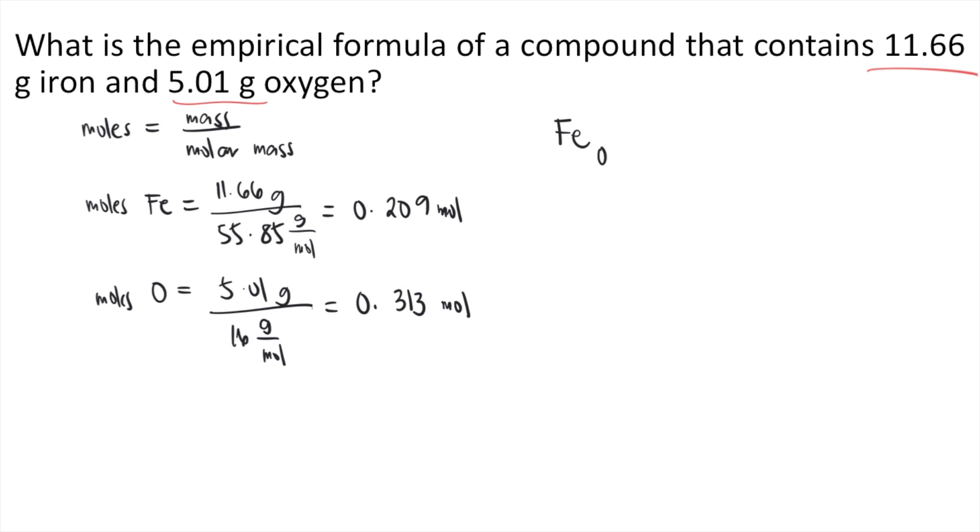you have 0.209, so you put that as the subscript. For oxygen, the subscript is 0.313. After doing that, you pick the smallest subscript. In this case, it's 0.209. What you need to do is divide all of the subscripts by that smallest number.